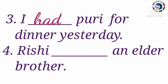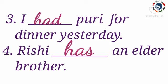Fourth one: Rishi ___ an elder brother. Children, this sentence is present tense, so we have to check the noun. Here, the noun is Rishi — it is a person, a singular noun. So what is the answer? Yes, has. We use has when we mention about a singular noun in the present tense. Rishi has an elder brother.